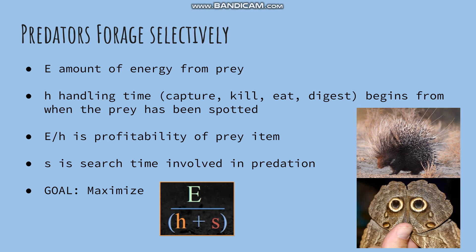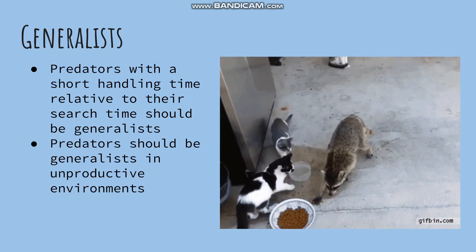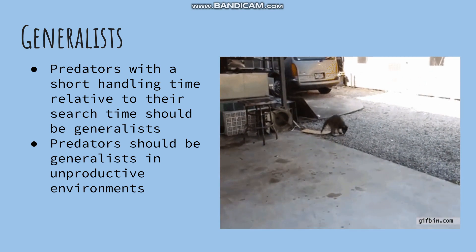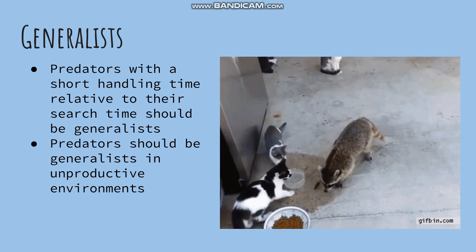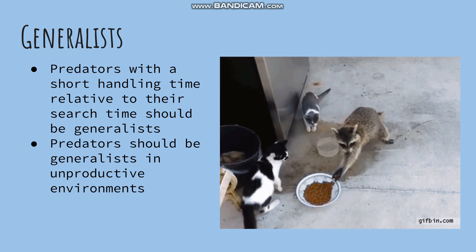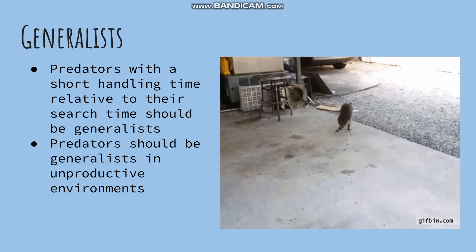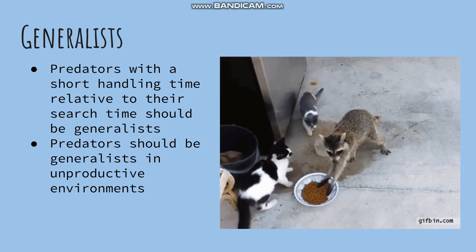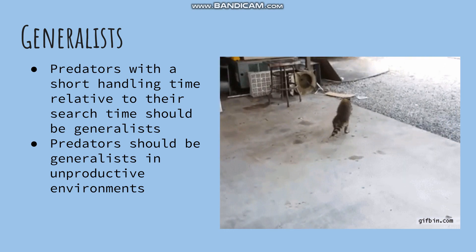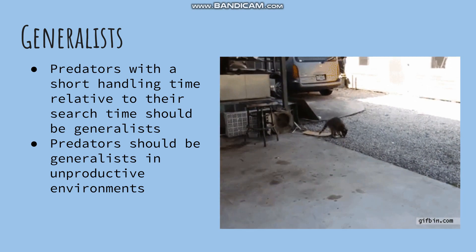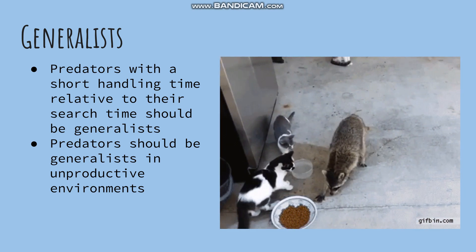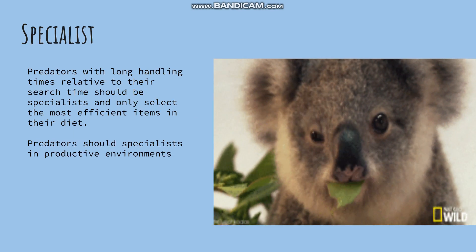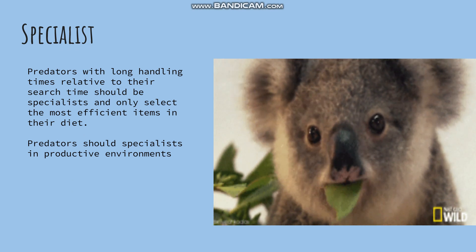Animals are generalists when profitable prey are rare, so eating anything and everything will optimize their energy intake in an unproductive environment. Predators should be generalists because being selective will select against you. Raccoons are a classic example of a generalist — they lower handling time relative to their search time, which allows them to have a broad diet and eat food fast when it is encountered.